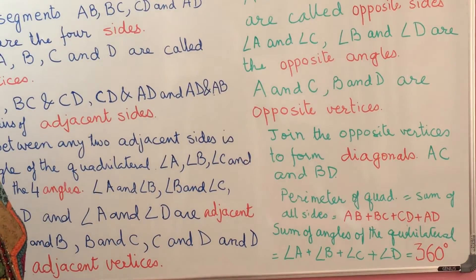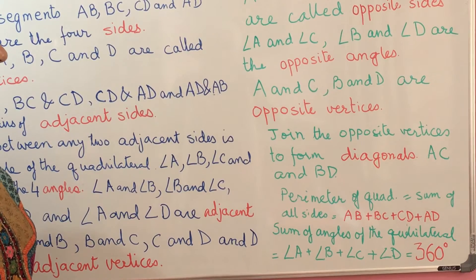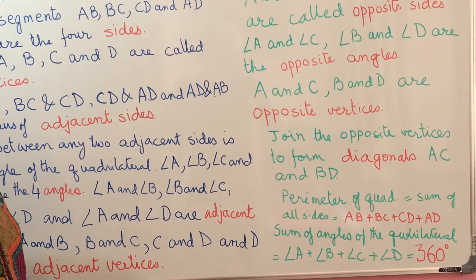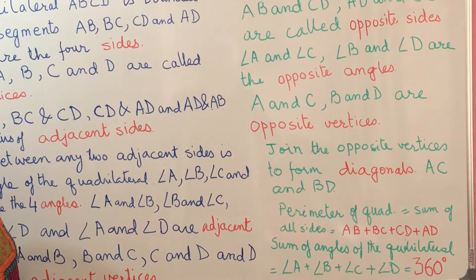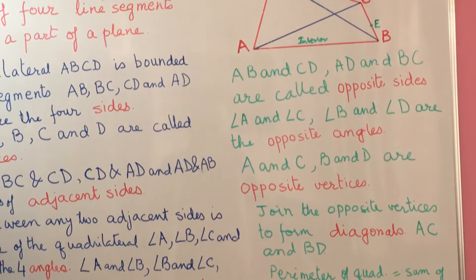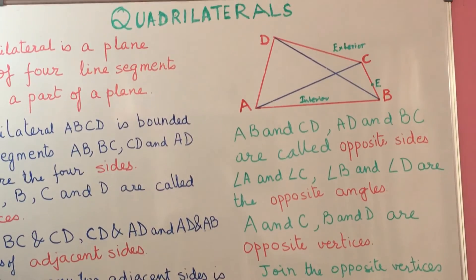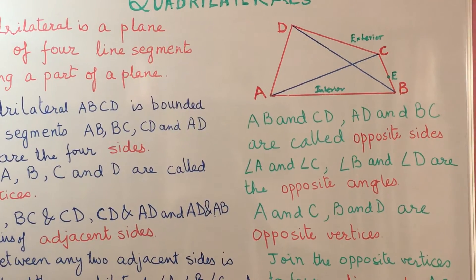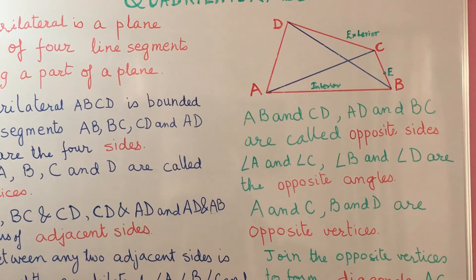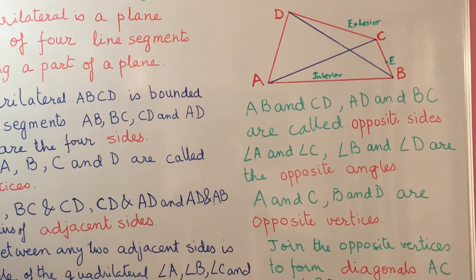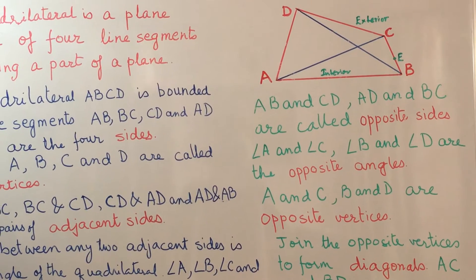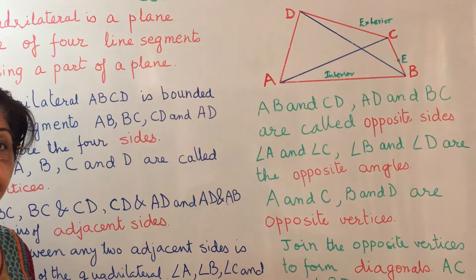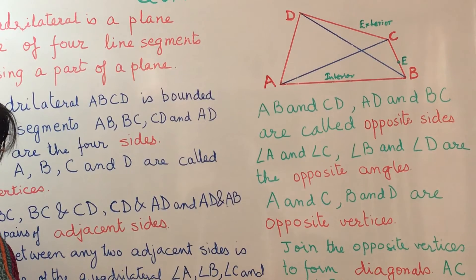Now we come to the sum of the angles of the quadrilateral. A quadrilateral has four angles, and the sum of all four angles is equal to 360 degrees. So angle A plus angle B plus angle C plus angle D equals 360 degrees.